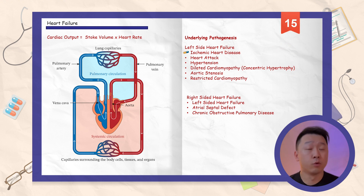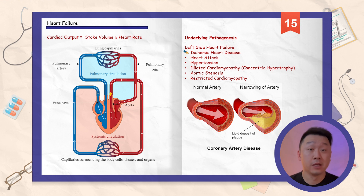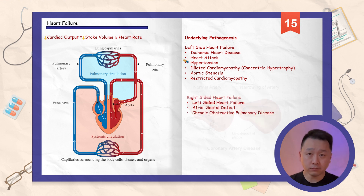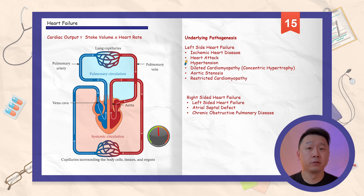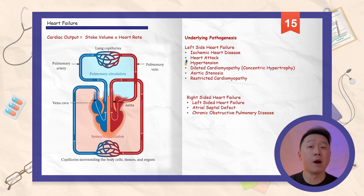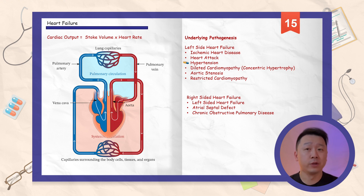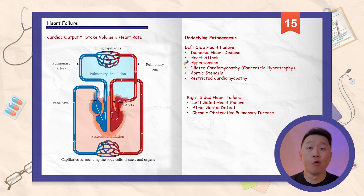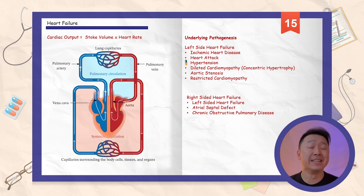Atherosclerotic plaque blocking a coronary artery can cause myocardium damage that prevents contraction during systole, leading to decreased stroke volume and cardiac output. In hypertension, increased arterial pressure in the systemic circulation makes it hard for the left heart to pump against the pressure gradient. To compensate, the body increases the heart's size, but long-term this may lead to acute decompensated heart failure. The enlarged heart requires more oxygen, and its increased size may compress coronary arteries, further diminishing oxygen supply and damaging the myocardium.